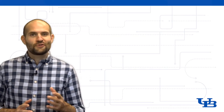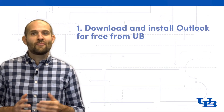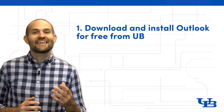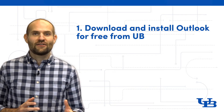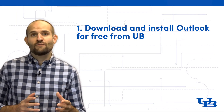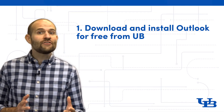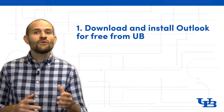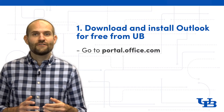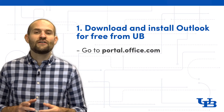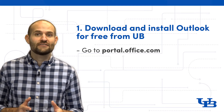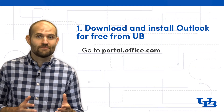Let's begin setting up your UB Mail by first downloading and installing the Outlook email client. Outlook is a part of Microsoft Office, so if you haven't already, download and install the latest version of Office from the Microsoft 365 portal at portal.office.com.